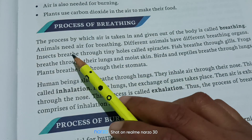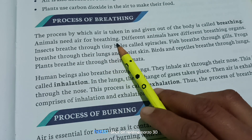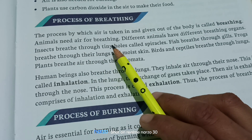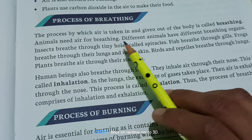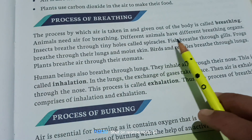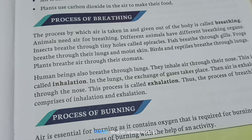With the help of the nose we take in and give out air. All animals need air for breathing. Different animals have different breathing organs. Insects breathe through tiny holes called spiracles. Fish breathe through gills. Frogs breathe through their lungs and skin.